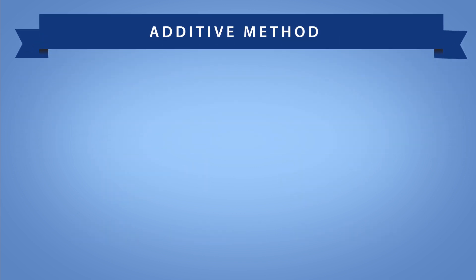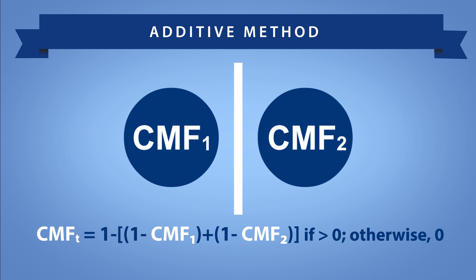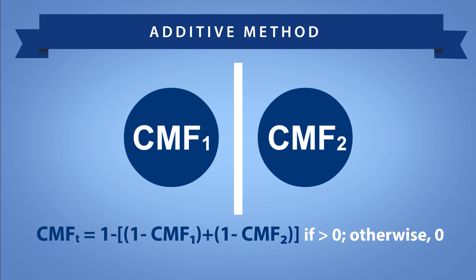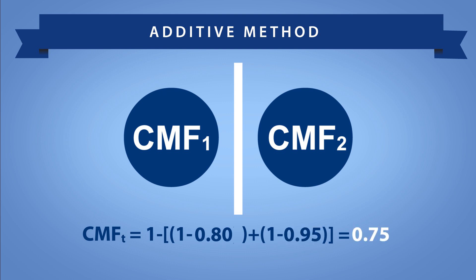The additive method is appropriate for scenarios where there is no overlap expected among the countermeasure effects or where there is an expected enhancing effect among the countermeasures. Using the additive method, you add the two effects, where CMF1 and CMF2 are the applicable CMFs and CMFt represents the combined effect. Note that there is a need to confirm that the combined effect does not exceed 100%. If it does, then assume a maximum reduction of 100%. For example, if CMF1 is 0.80 and CMF2 is 0.95, then CMFt is 0.75.